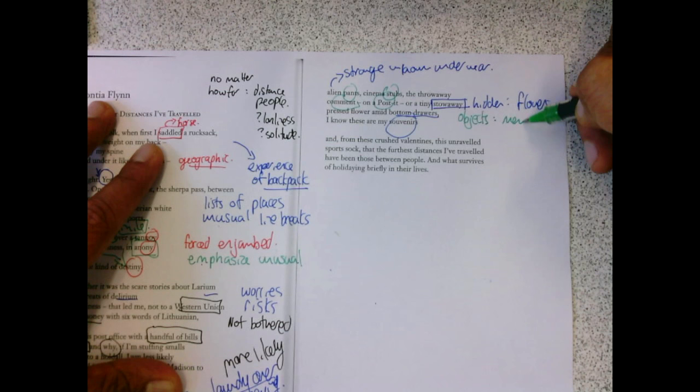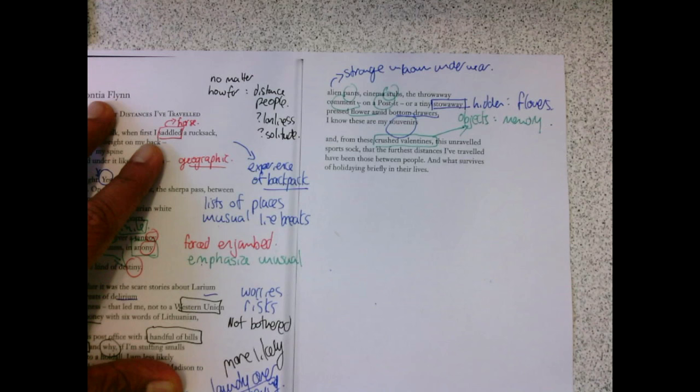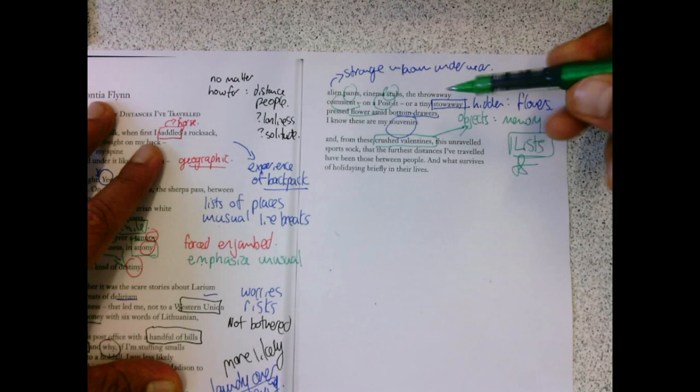These objects are her memory. And from these, and she calls them crushed valentines. These flowers, these things. This unraveled sports sock. And she uses lists to really give you the variety of her life and travels.